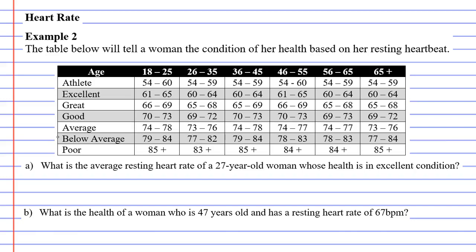Let's look at question A. It says: what is the average resting heart rate of a 27-year-old woman whose health is in excellent condition? If you're 27, you're in the age bracket 26 to 35. If you are in excellent health — let's circle excellent here — you will notice that it lines up here. So your average resting heart rate is somewhere between 60 to 64 beats per minute.